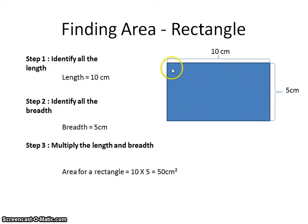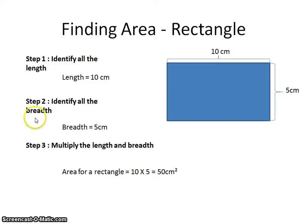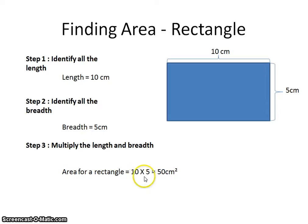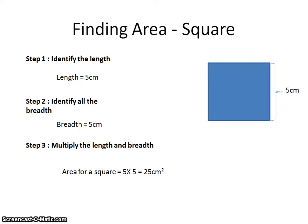Finding the area of a rectangle: we have a rectangle with a length of 10 centimeters and a breadth of 5 centimeters. Step 1 is to identify the length, which is 10 centimeters. Step 2 is to identify the breadth, which is 5 centimeters. Then we multiply the length by the breadth — remember, area is the amount of paint required to cover the whole rectangle. So 10 × 5 gives us 50 centimeters squared.